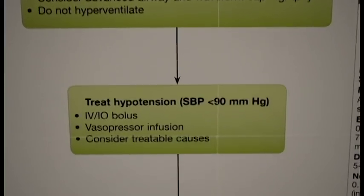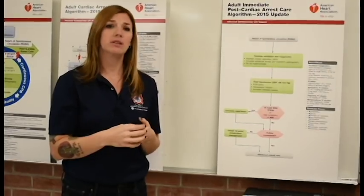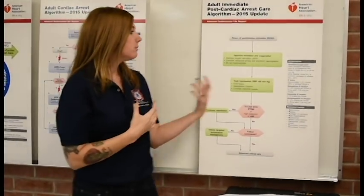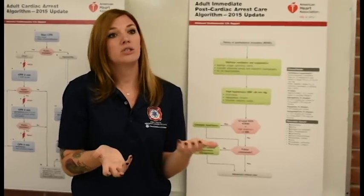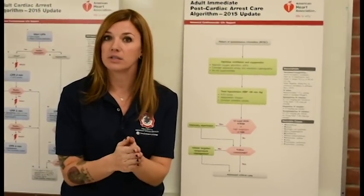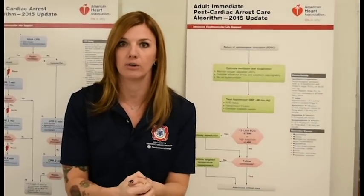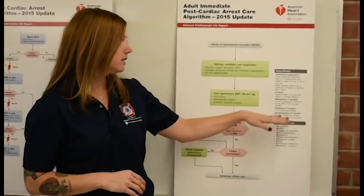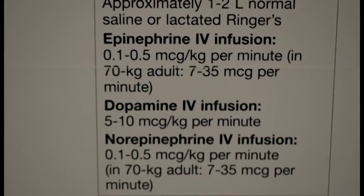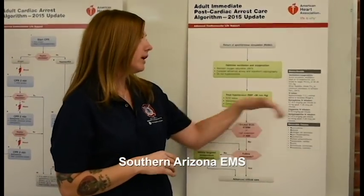We want to make sure the patient's pulse is circulating appropriately and their blood pressure is good enough. You want to get a blood pressure. If we are hypotensive — blood pressure below 90 — try fluids first, because it may have been hypovolemia. Stick to your 20 cc per kilogram bolus, but generally one to two liters of saline or lactated ringers, maintaining lung sounds to make sure we're not overloading the patient. If that does not bring the blood pressure up, start looking at pressors such as epinephrine, dopamine, or norepinephrine.